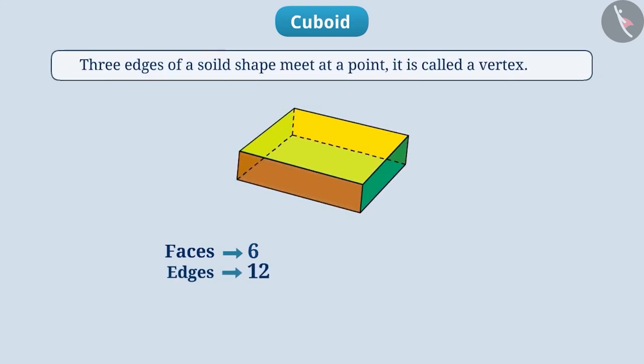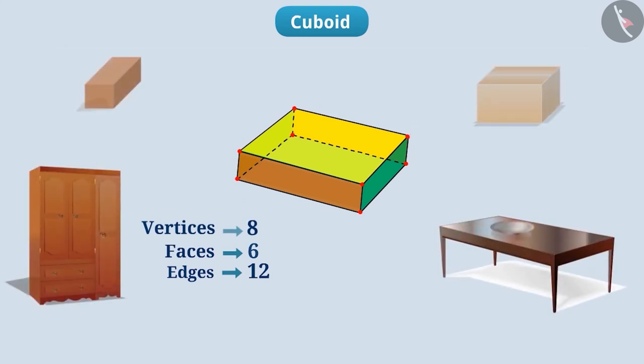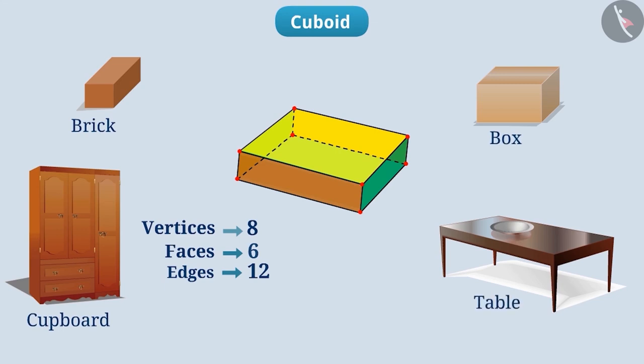Similarly, when three edges of a solid shape meet at a point, it is called a vertex. So, now, can you tell how many vertices a cuboid has? Let us tell you. Here, the vertex is one, two, three, four, five, six, seven and eight. The shape of the cuboid can be seen in a brick, cupboard, box and table. Try yourself to find some more objects of this shape.